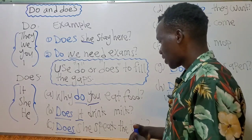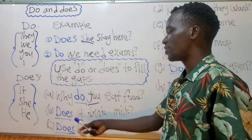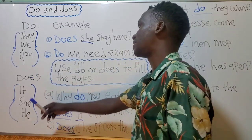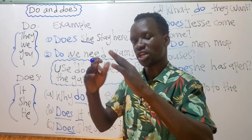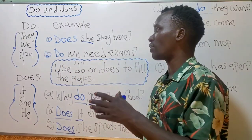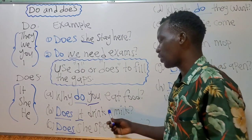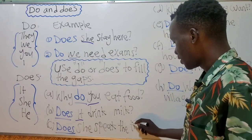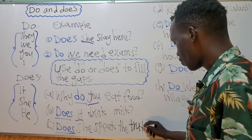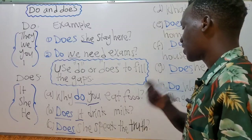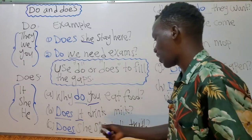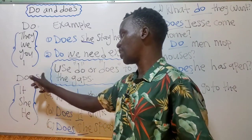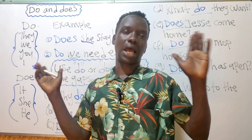It can be a cat, a dog, or anything. So: 'Does it drink milk?' When asking in question form, you use 'do' or 'does' depending on the pronoun. Next: 'Does she speak the truth?' — t-r-u-t-h. They are talking about one girl, so they use 'does.' A girl takes 'does,' a boy also takes 'does,' and 'it' also takes 'does.'